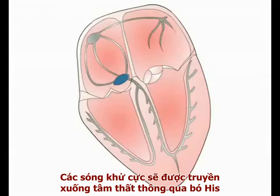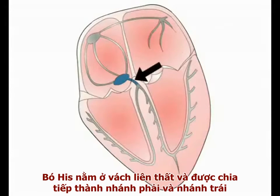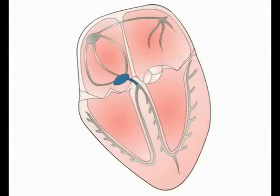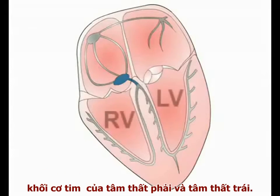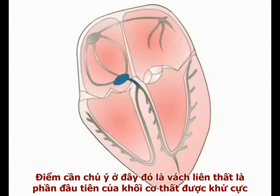After this short delay, the depolarising signal is transmitted into the ventricles via the bundle of His. The bundle of His lies in the interventricular septum and divides into right and left bundle branches. The right and left bundle branches transmit the depolarising signal into the muscle mass of the right and left ventricles respectively. We should note at this point that the interventricular septum is the first part of the ventricular muscle mass to depolarise.